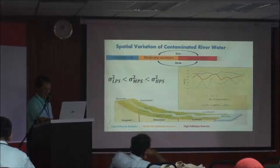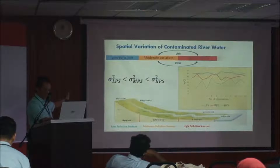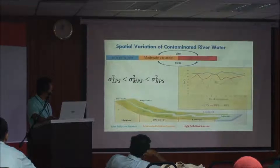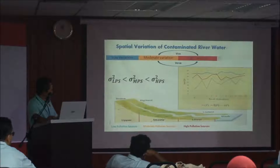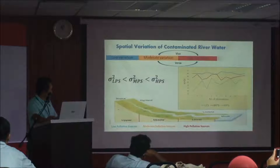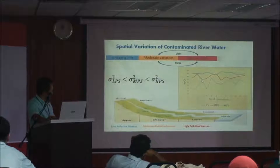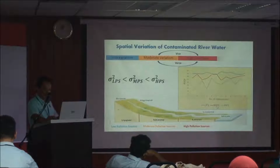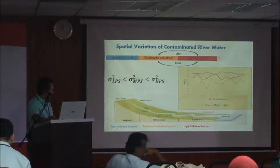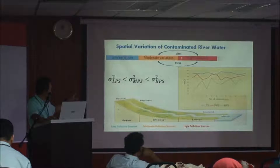Spatial variation of contaminated river water — when we translate this to statistics, we can see three different patterns in the line graph based on different observations. With a sample size of 12, the blue solid line refers to low pollution sources (LPS) at the upstream; the green solid line refers to moderate pollution sources (MPS) at the middle reach; and the third line refers to high pollution sources (HPS), usually located at the downstream. HPS usually shows higher variation in the data, and variance of LPS is smaller than MPS, which is smaller than HPS.